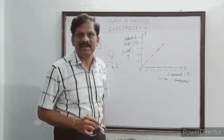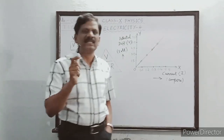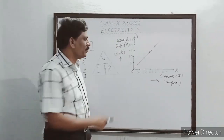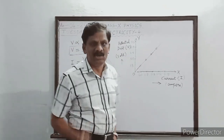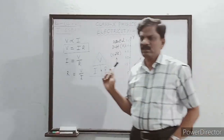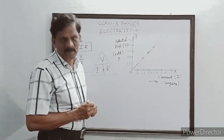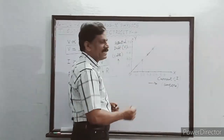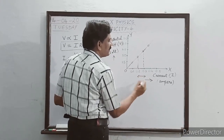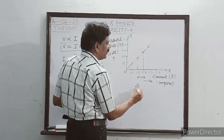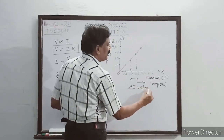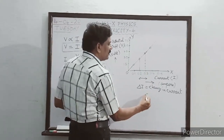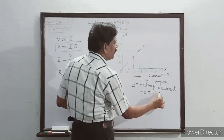The graph is a straight line passing through the origin. I will consider any two points on the graph and project them on the x-axis. This difference is denoted by ΔI, the change in current. The final value minus the initial value equals 0.3 minus 0.2, which is 0.1 ampere.